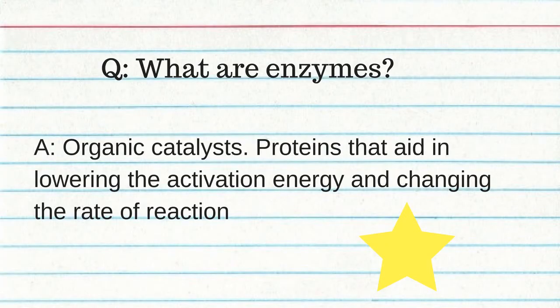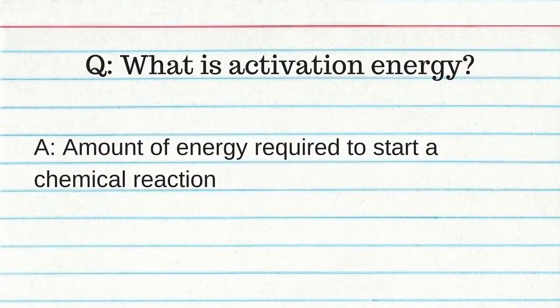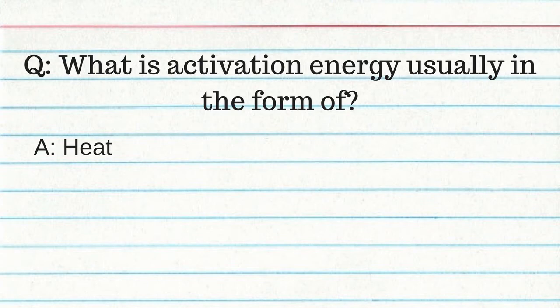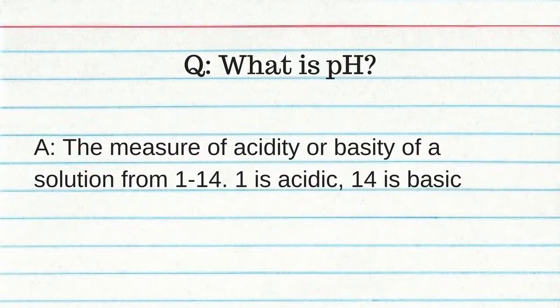What are enzymes? They are organic catalysts — proteins that aid in lowering the activation energy and changing the rate of reaction. What is activation energy? The amount of energy required to start a chemical reaction, usually in the form of heat. What is pH? The measure of acidity or basicity of a solution from 1 to 14. 1 is acidic and 14 is basic. pH is measured by testing for the H+ ions of a solution.